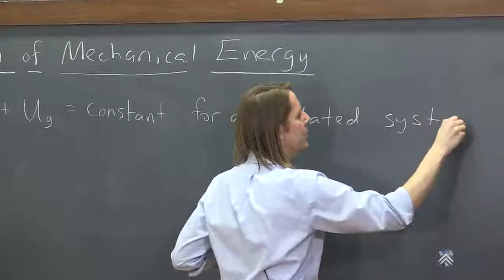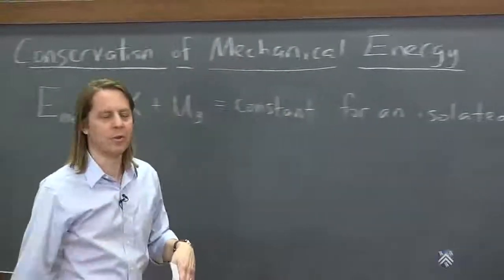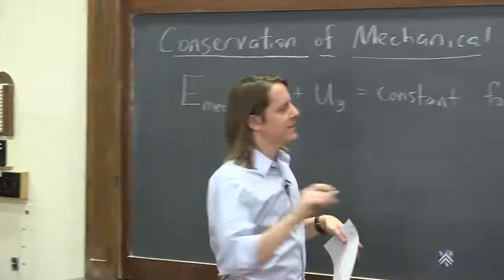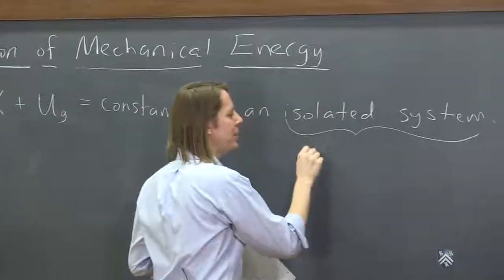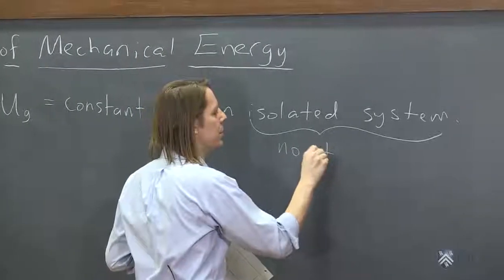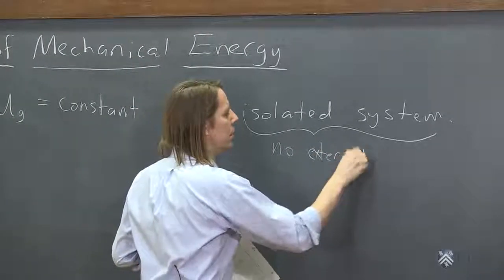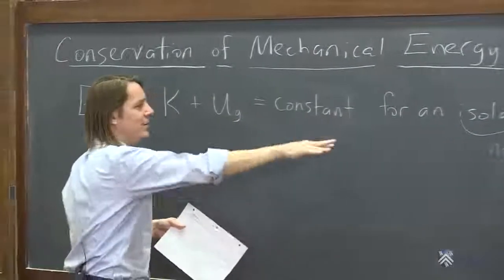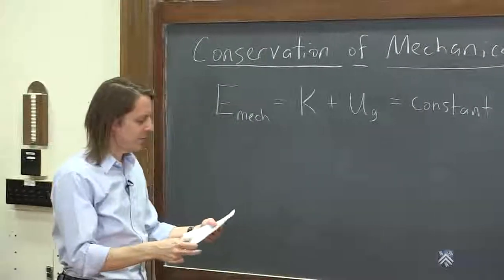So maybe the system is just the object you're considering, or maybe it's two objects. So by isolated system, let's clarify a little bit there. We really mean that there's no external work. Or well, we don't mean there's no external work. We mean that this will be constant, if there is no external work coming into the system.